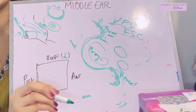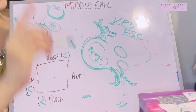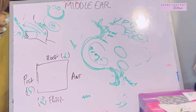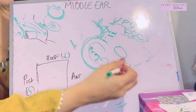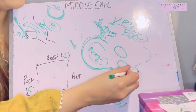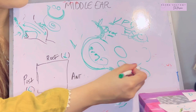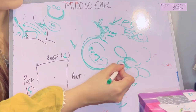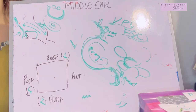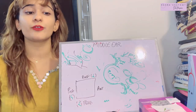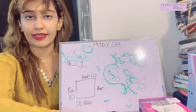The two prominences on the medial wall are: the prominence of the facial canal (F) and the prominence of the lateral semicircular canal (S). Of the three semicircular canals — anterior, posterior, and lateral — the lateral one forms a prominence on the medial wall.